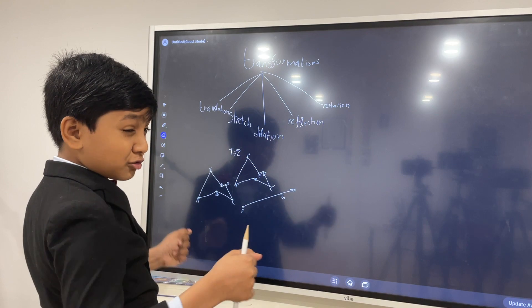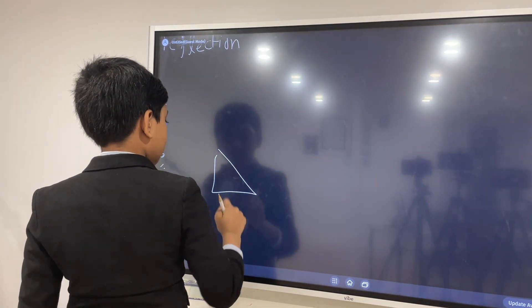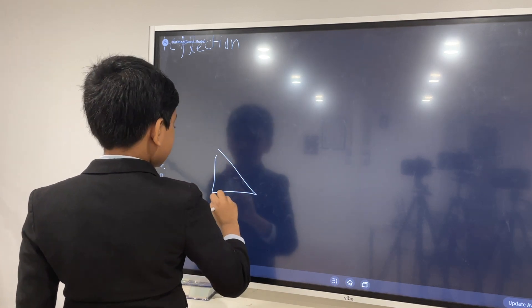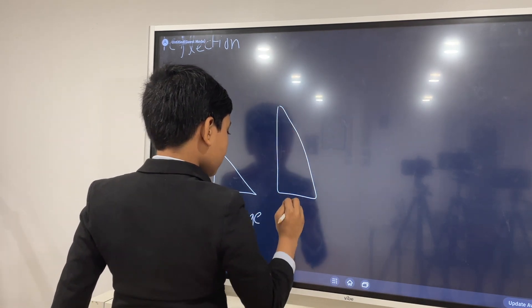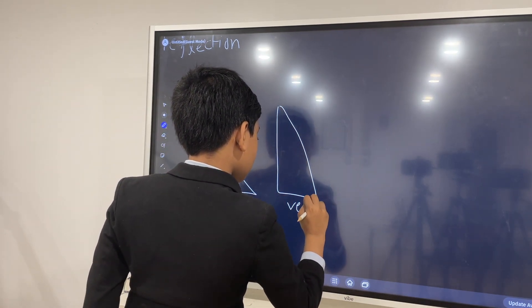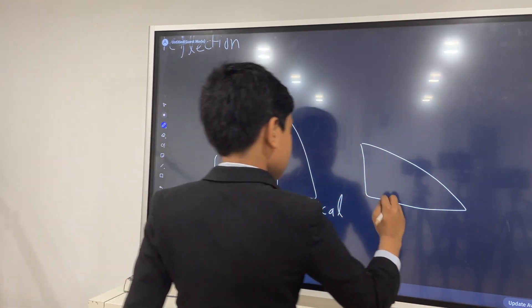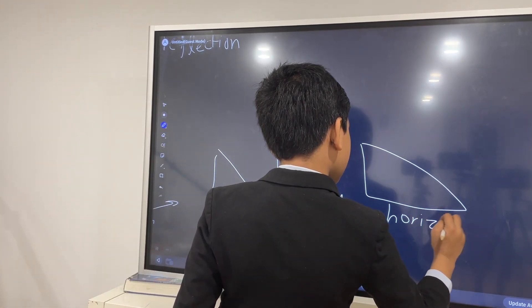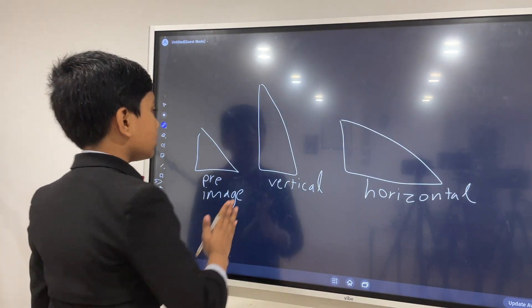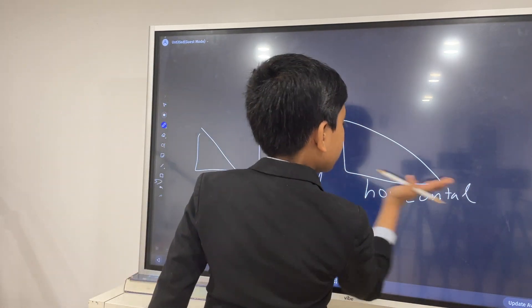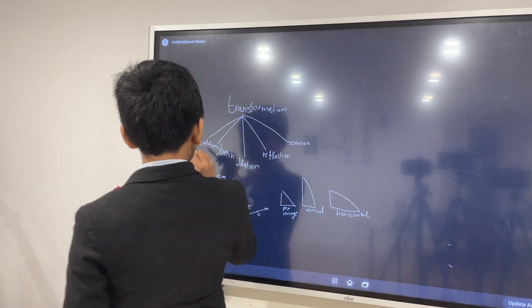So now, next one. Stretch. You can probably guess what that means. So this is our pre-image. This is our vertical stretch. And this is our horizontal stretch. It's essentially just increasing the X or Y length. So vertical, you're increasing the length of the Y leg. Horizontal, you're increasing the length of the X leg. So now, we've done two of them.